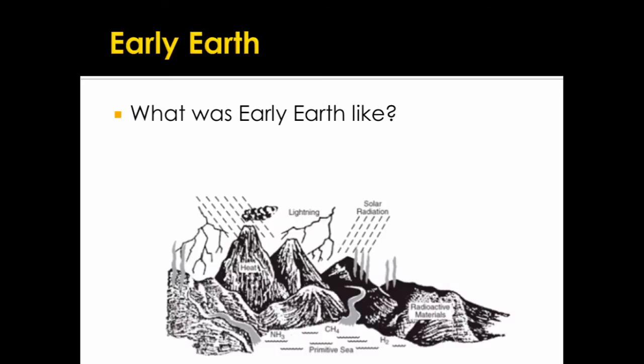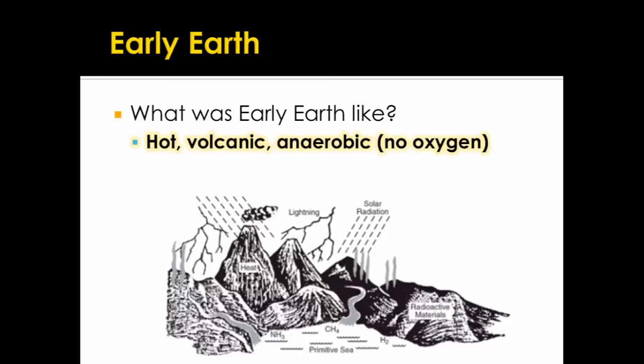First let's discuss what early Earth was like. As you can see in this image here, early Earth had lots of volcanoes, lots of lightning, and it didn't really look exactly like Earth does today. It was hot, volcanic, and it was anaerobic. Anaerobic means there was no oxygen available on early Earth.